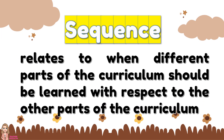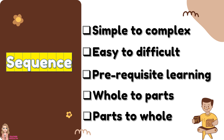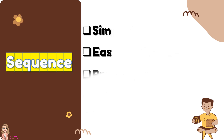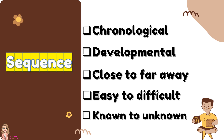Next is the sequence. It relates to when different parts of the curriculum should be learned with respect to other parts. Sequencing can be done from simple to complex, easy to difficult, prerequisite learning, whole to parts, and parts to whole. Additionally, sequencing can be chronological, developmental, close to far away, easy to difficult, and known to unknown.